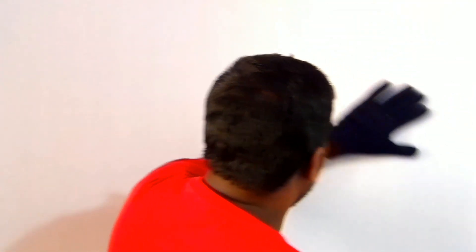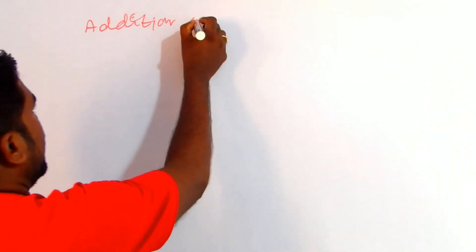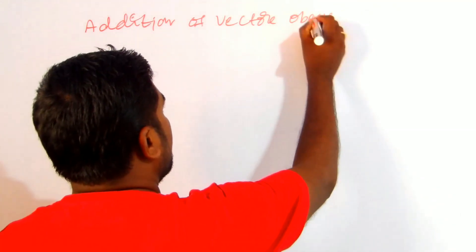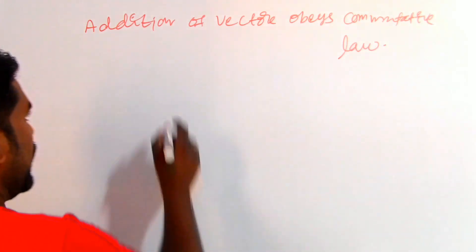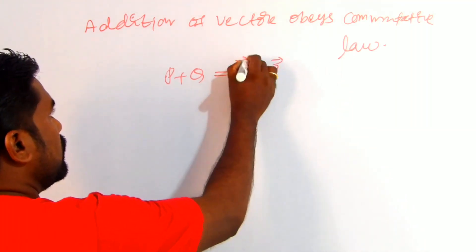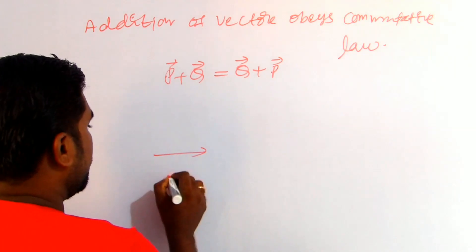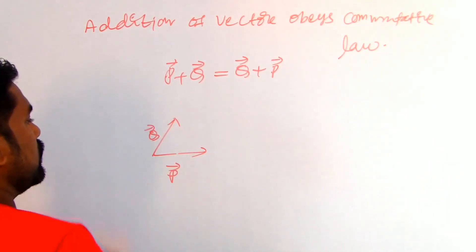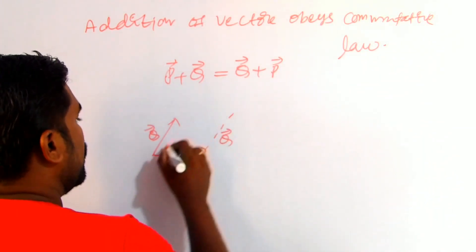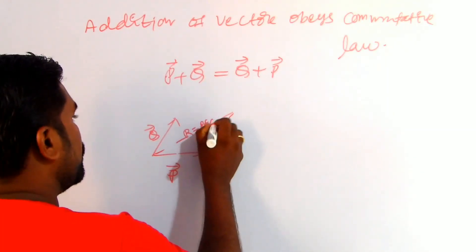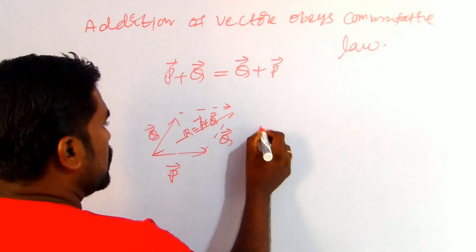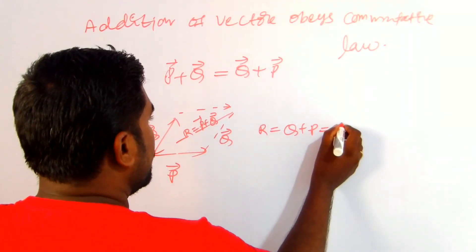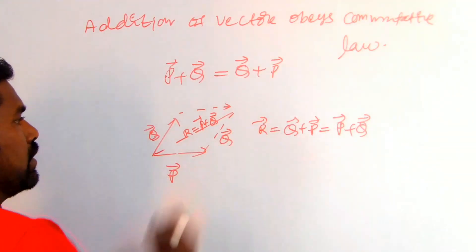What laws does vector addition obey? First, addition of vectors obeys the commutative law: p plus q equals q plus p. Using parallel shift, we can show vector p plus q gives resultant R, and shifting vector p onto q plus p also gives the same resultant R. Therefore R equals q plus p equals p plus q.